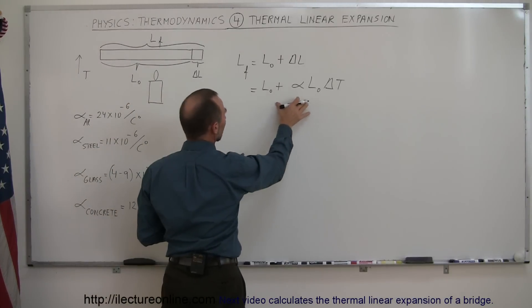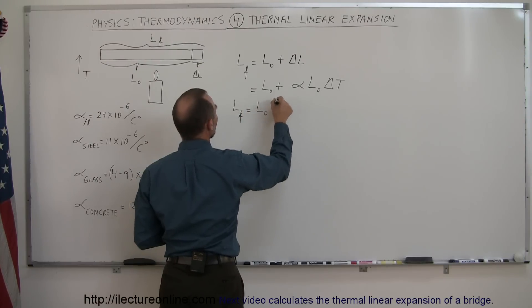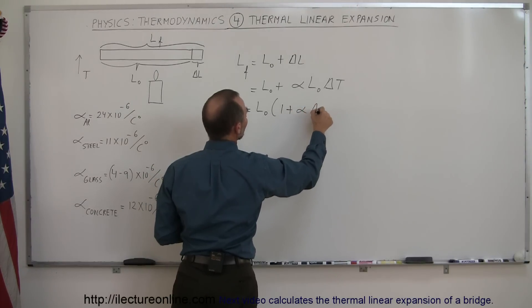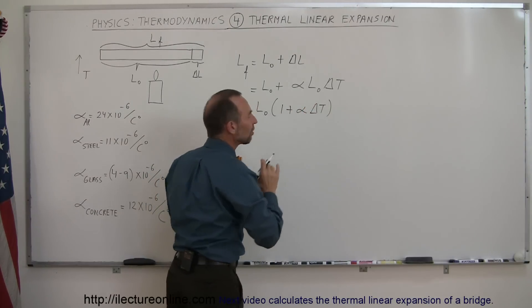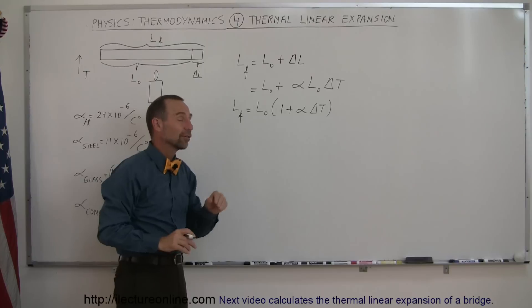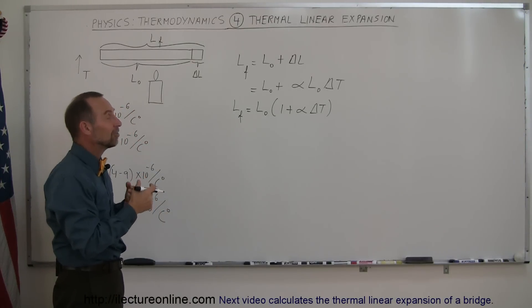Now notice we can factor in L sub naught. So we can say that the final length is equal to the initial length times one plus alpha times delta T. Now we're going to simplify this here because the coefficient of linear expansion isn't in itself linear; it changes over temperature as well. But for now, just to keep things simple, we'll just assume that this is a constant.